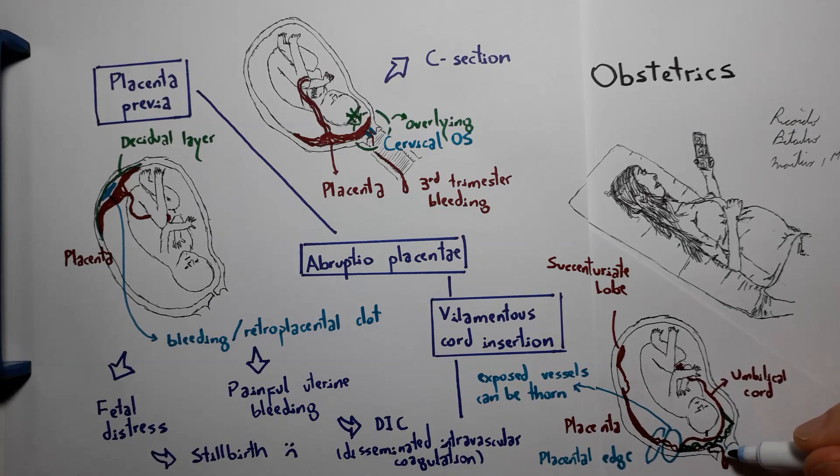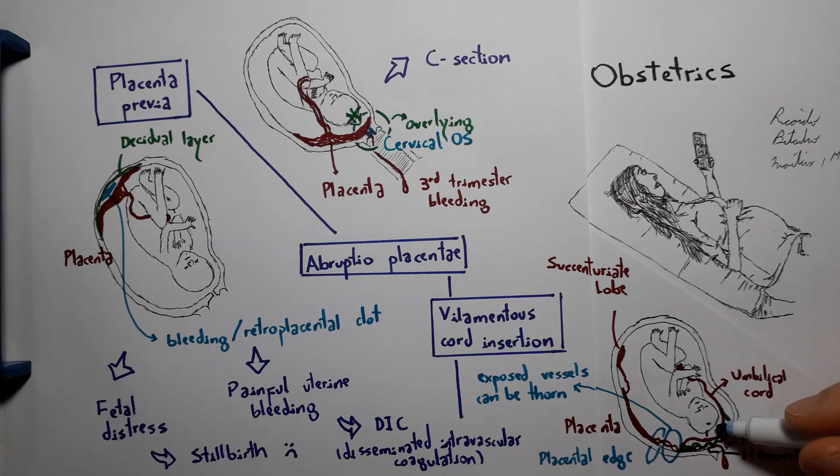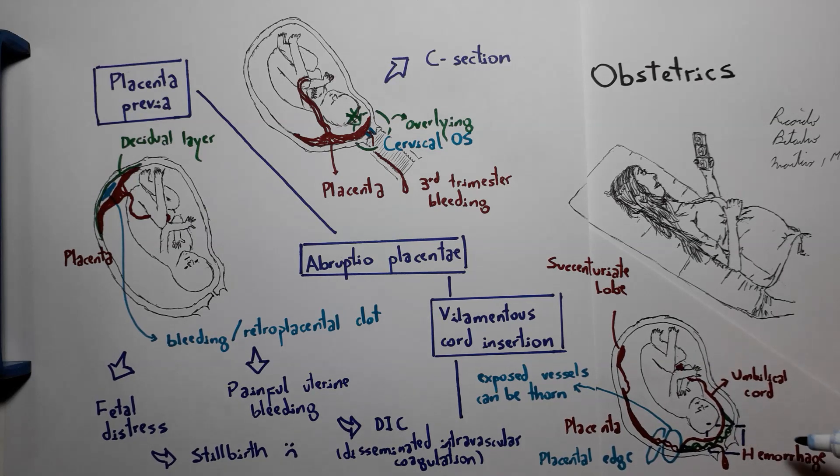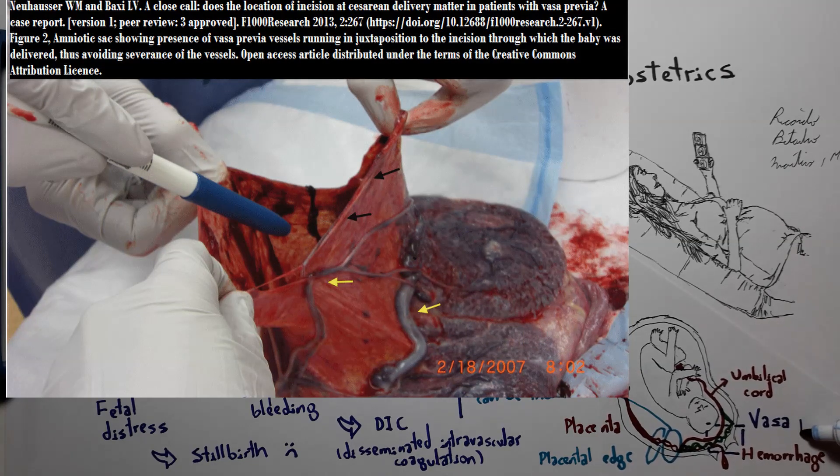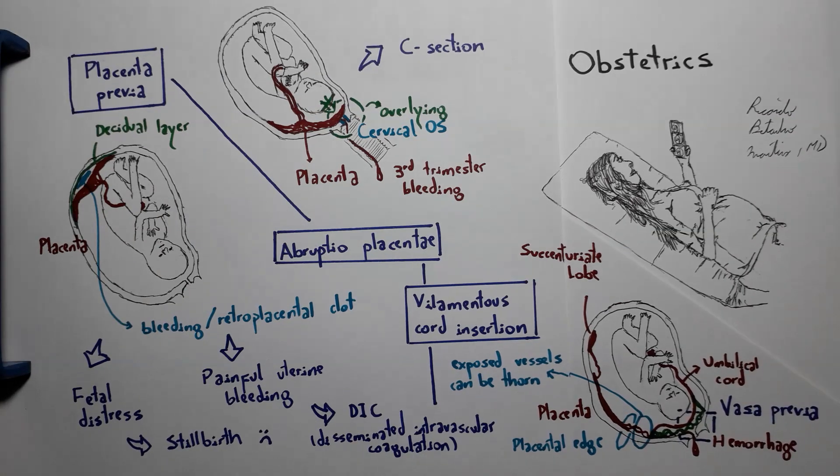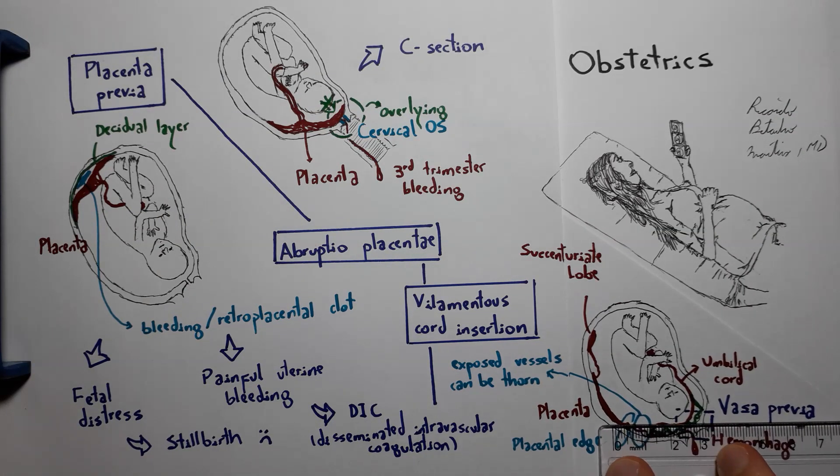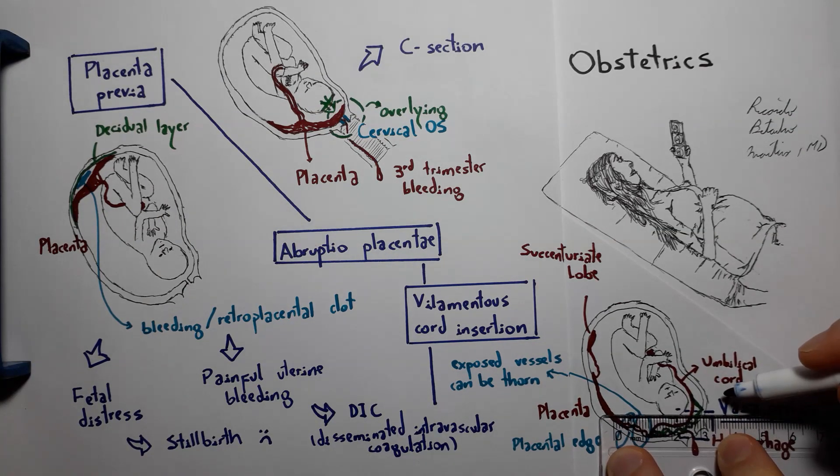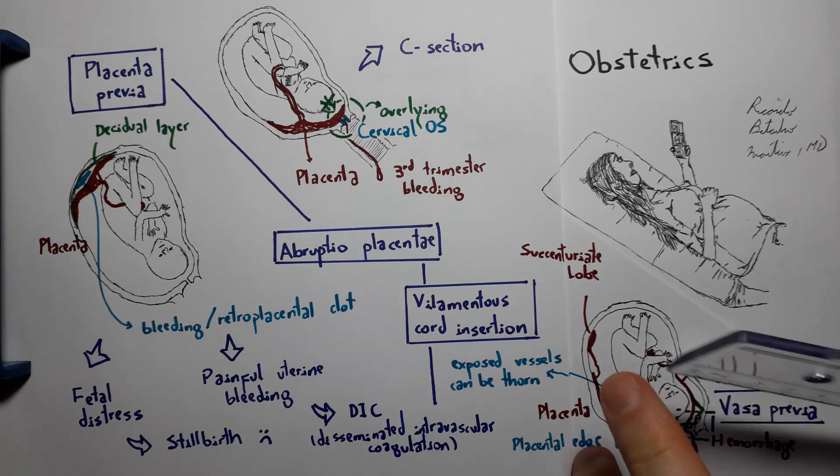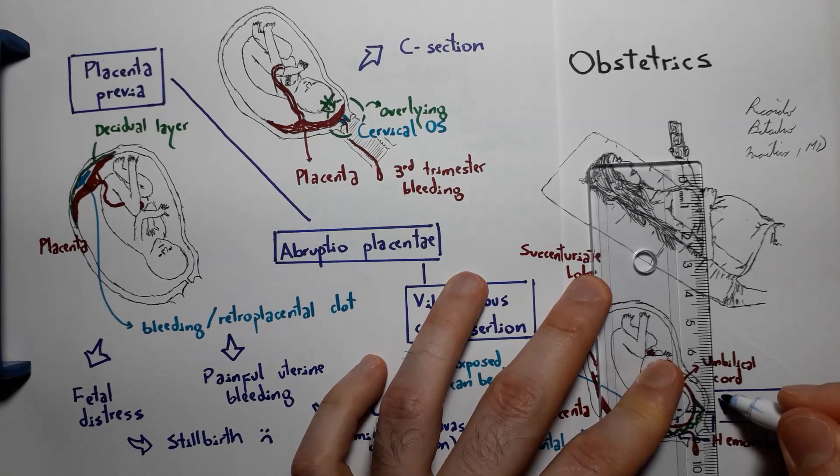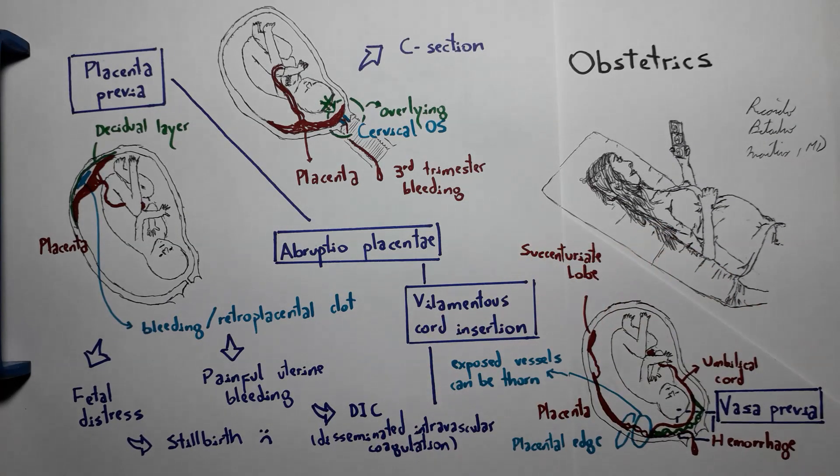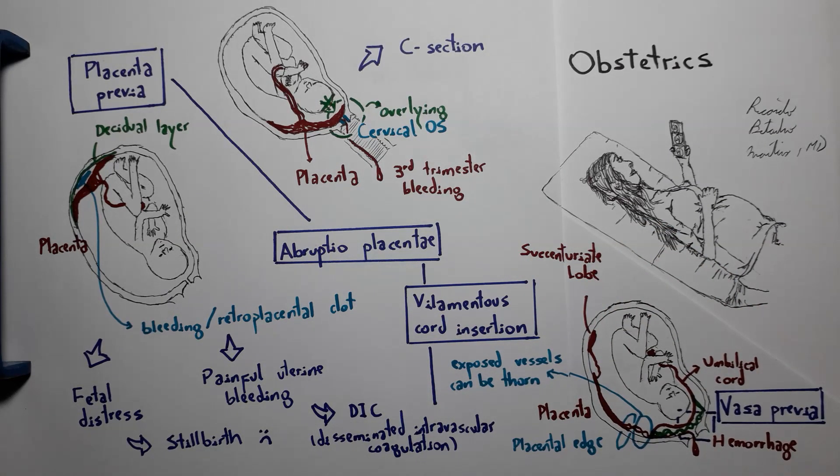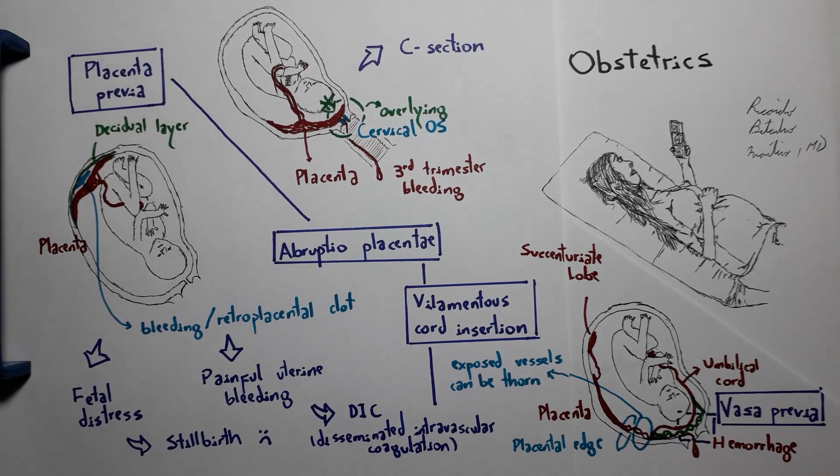Vasa previa occurs when the umbilical vessels are close to or overlying the internal cervical os, in a condition analogous to placenta previa. Since the umbilical vessels are now unprotected from inserting beyond the placental edge, having them in the fetus's path is now a problem, since they can now be ruptured far more easily. Therefore, also a potential indication for C-section.